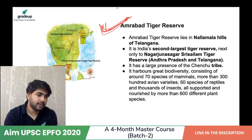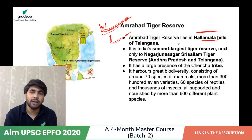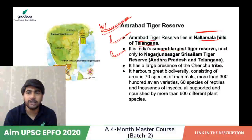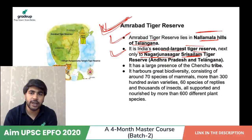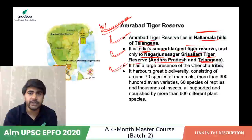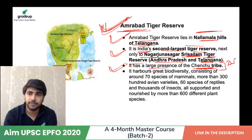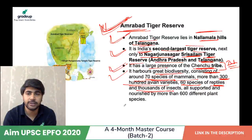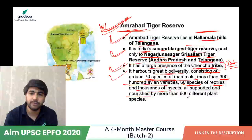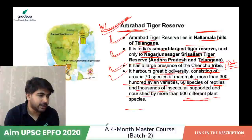Amrabad Tiger Reserve lies in the Nalmalla Hills of Telangana. It is the second largest Tiger Reserve of India, next only to Nagarjuna Sagar-Srisailam Tiger Reserve, which spans Andhra Pradesh and Telangana. The reserve has a large presence of the Chenchu tribe and harbors great biodiversity consisting of around 70 species of mammals, 300 bird species, 60 species of reptiles, thousands of insects, and over 600 different species of plants.